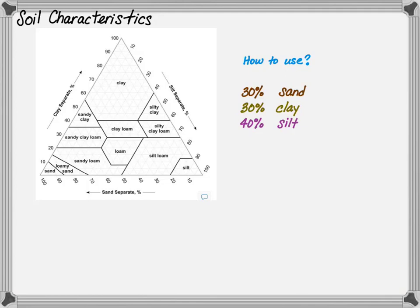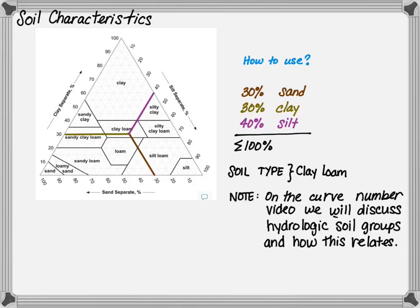So imagine we had 30% sand, 30% clay, and 40% silt. So we go 30% sand, 30% clay, and 40% silt. And we're left with a soil type called clay loam. Please note, on the curve number video, we will discuss how hydrologic soil groups are related to the soil characteristics described through the texture triangle. But it is really important if you have never seen a soil texture triangle such as this to be familiar with it and to understand how to read it.